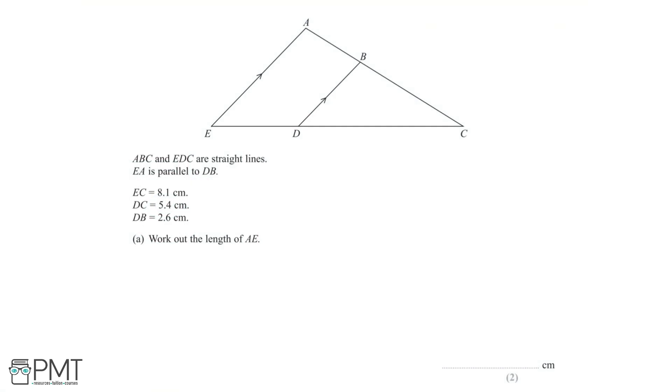In this question, we're given a diagram, and we're told that ABC and EDC are straight lines.